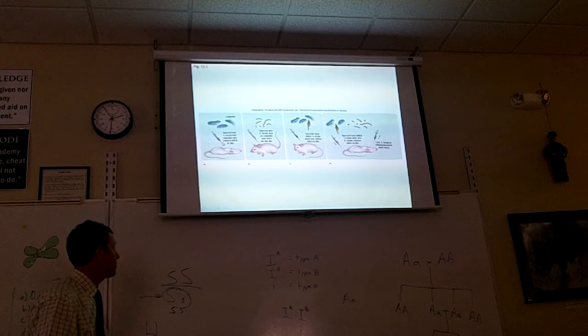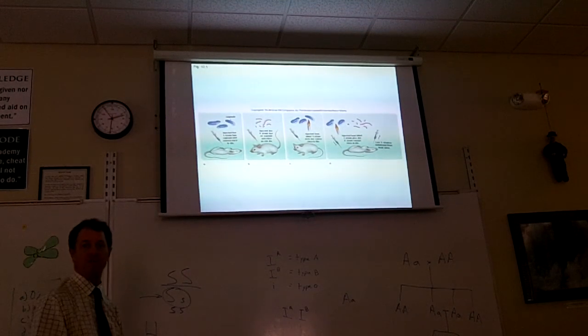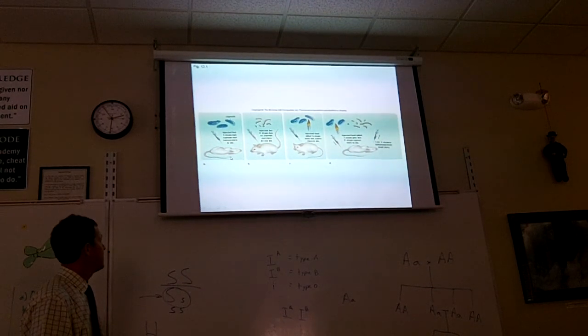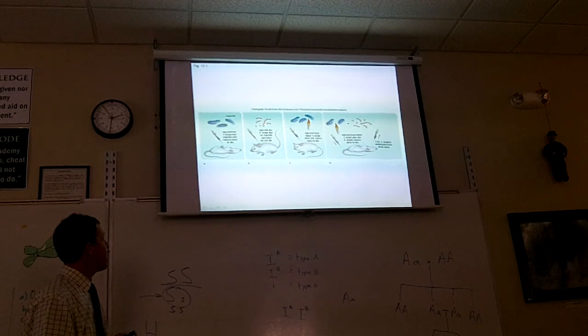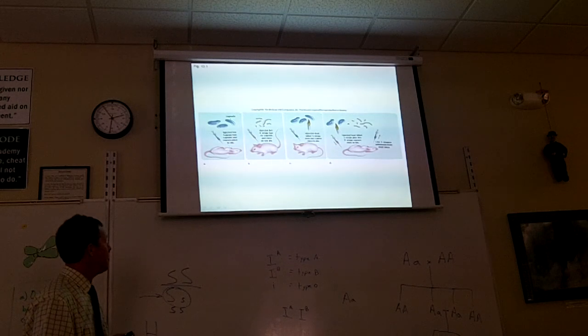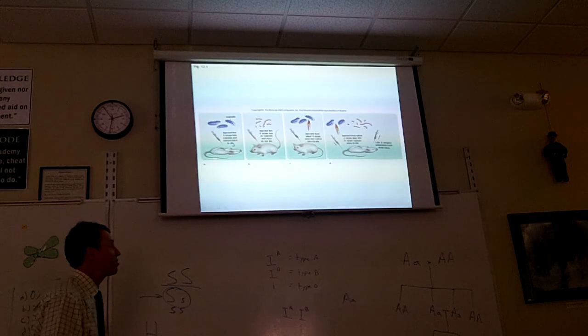What was the experiment called? Griffith's Transformation Experiment. It's on the bottom of 215. He took these S-strain bacteria and injected them into mice and the bacteria died. He wasn't doing this to try and kill mice. He was trying to find some kind of medication or something.